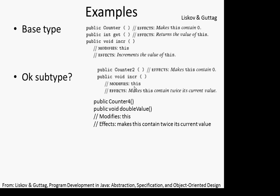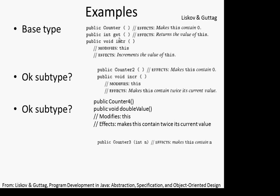Here's Counter4 — is this a legitimate subtype of Counter? It has a method called 'doubleValue' in addition to all the inherited methods. Sure, that's fine. Any value that could be doubled here could be gotten by many increments. So it's not going to yield any wacko values that you couldn't have gotten through Counter. Someone who thinks it's one of these — it secretly being Counter4 — won't even know about doubleValue. They're calling the standard methods and it looks fine. That's a legitimate subtype.